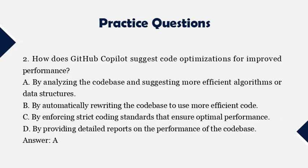Question 2: How does GitHub Copilot suggest code optimizations for improved performance? A. By analyzing the code base and suggesting more efficient algorithms or data structures. B. By automatically rewriting the code base to use more efficient code. C. By enforcing strict coding standards that ensure optimal performance. D. By providing detailed reports on the performance of the code base. Answer: A.